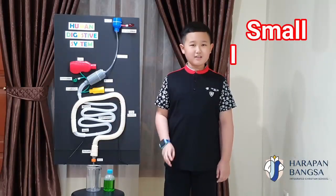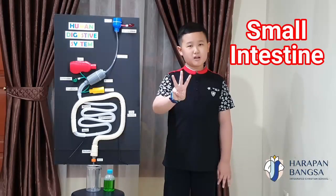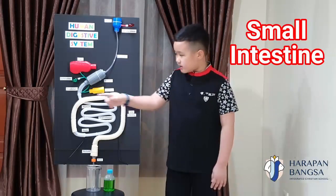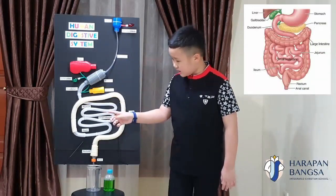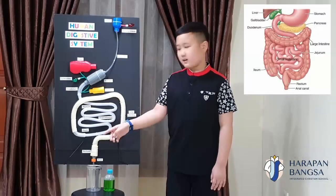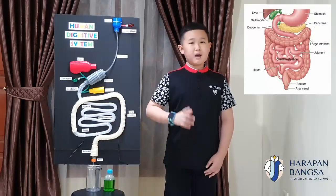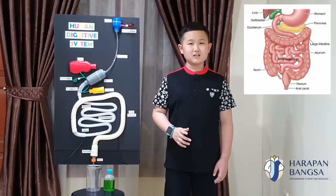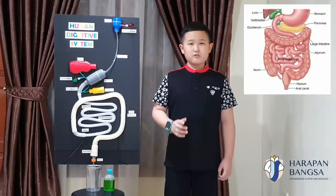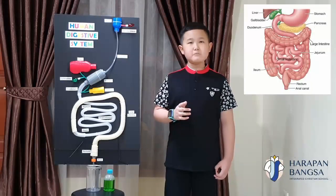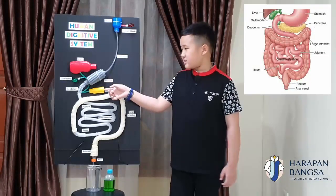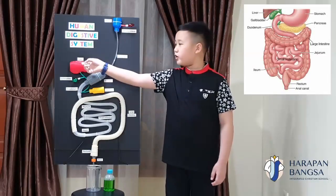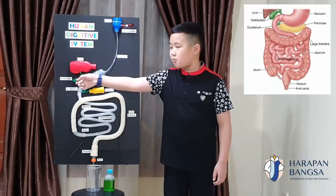The small intestine has three parts: the duodenum, jejunum, and ileum. The small intestine helps to finish digesting the food with the enzymes produced by the pancreas, as well as bile from the liver and the gallbladder.